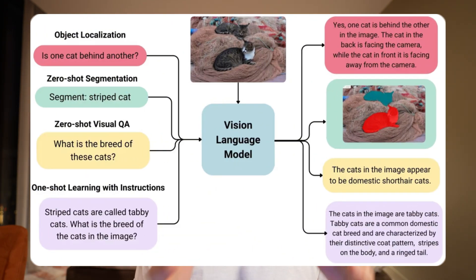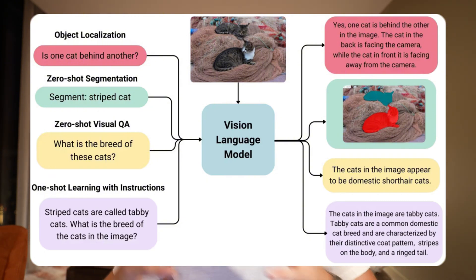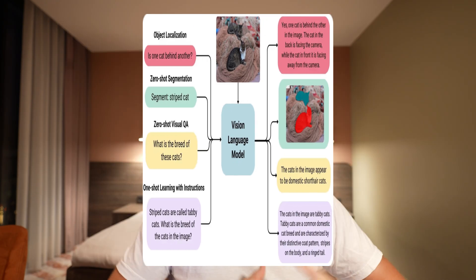The core idea behind vision language models is embeddings. Just as traditional language models convert text into embeddings, we do the same with images — dividing them into smaller patches and creating embeddings from those. We then combine image embeddings with text embeddings using corresponding image-text pairs, train on a huge dataset, and that gives us vision language models.